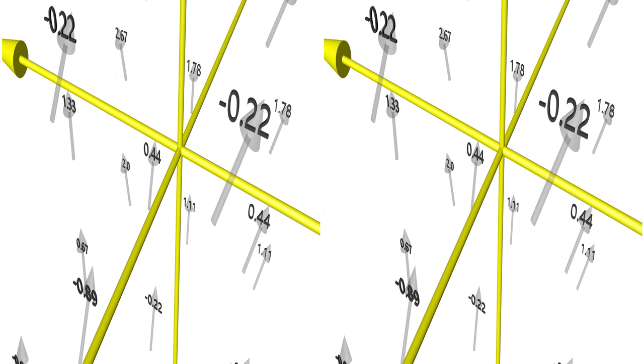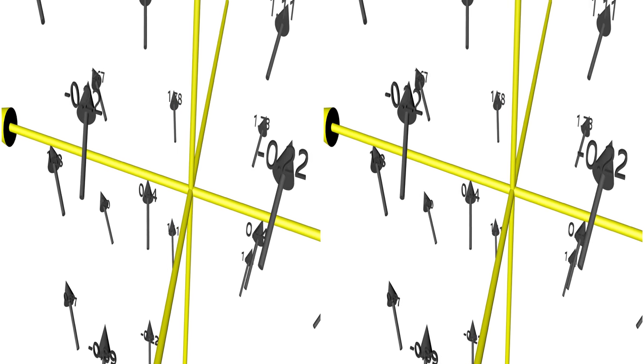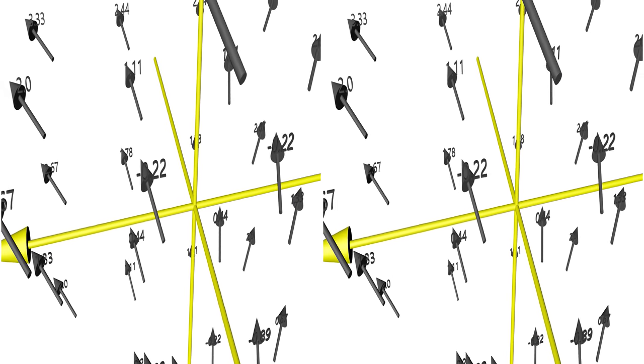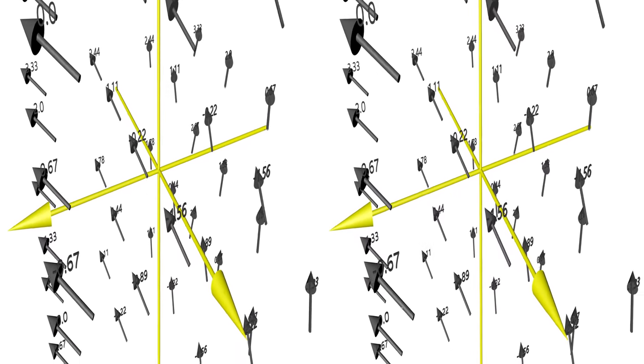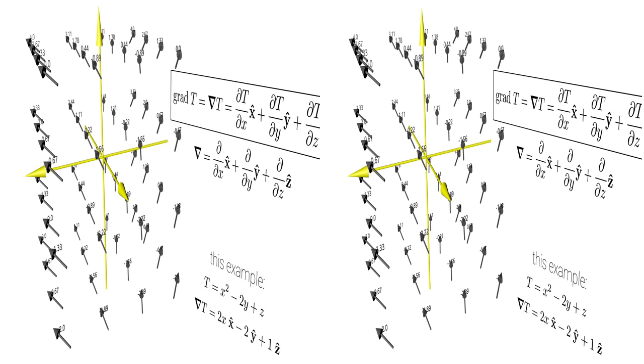To quantify this relative change and the directionality, you can take the derivative of the scalar field in three different directions. This is called the gradient of the scalar function.